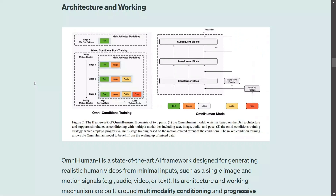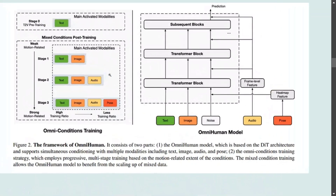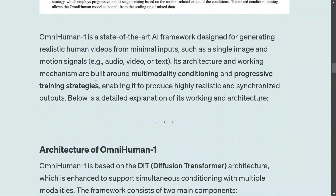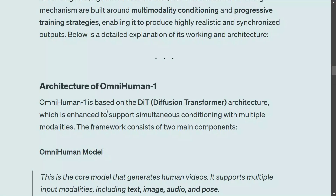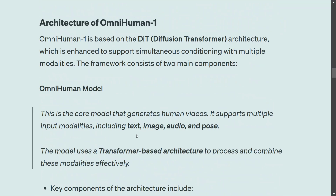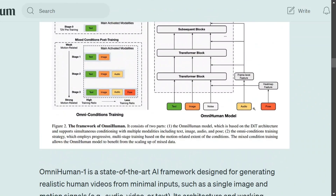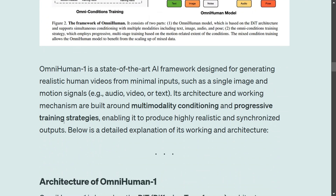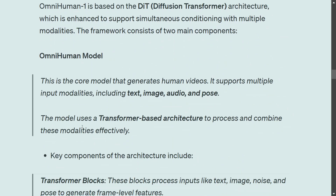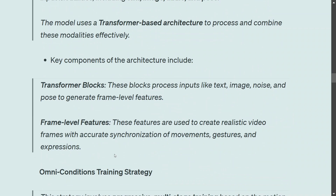Here is the architecture: multi-modality conditioning and progressive training methods are used. DiT — diffusion transformer — is the approach used for generating videos and images now. I'll cover diffusion transformers in detail in my next video, but for now it is a combination of diffusion with transformer architecture. The OmniHuman model can intake multiple things: text, images, random noise, audio, and pose. The model uses a transformer-based architecture to process and combine these modalities, and transformer blocks process all four input types.